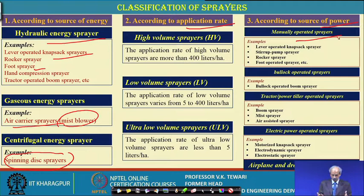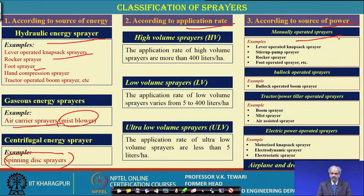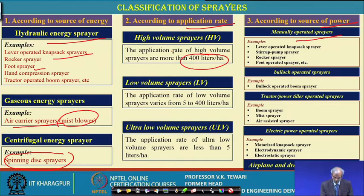Then animal-operated systems — you could have animal-operated systems, which in some locations you might still see. The situation is changing, so these are not very much in vogue now, but one can use the animal energy. The high volume ones are 400 liters per hectare, the low volume ones are less than 400 liters per hectare, and ultra-low volume can be as low as 1 to 5 liters per hectare.